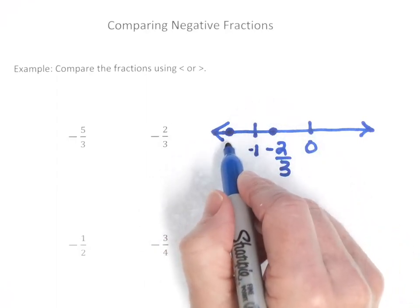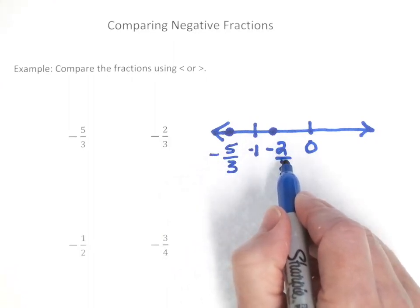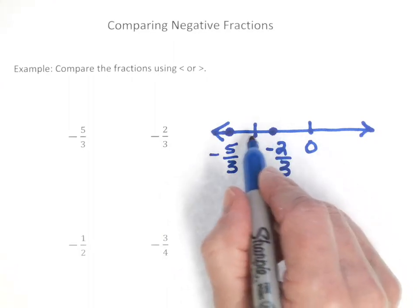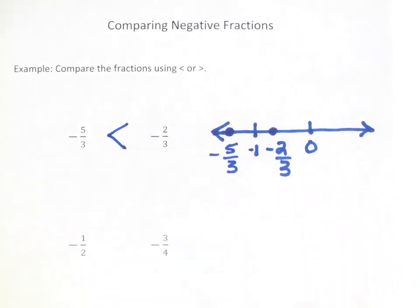So we would have negative five-thirds is to the left of negative two-thirds, and numbers that are to the left on number line are less than. Therefore negative five-thirds is less than negative two-thirds.